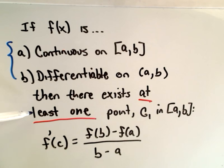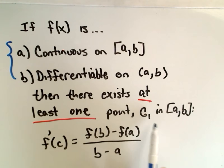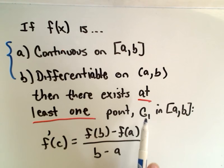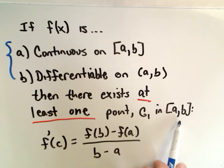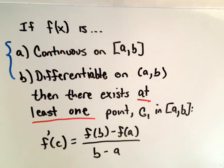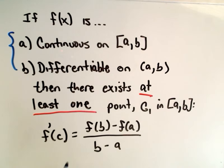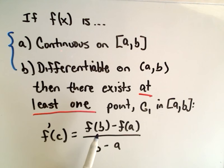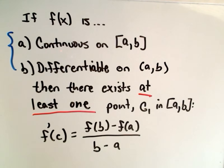Then there's at least one point — I'm going to call them c1, c2, c3, etc. if there's more than one — in this closed interval that satisfies this property. It basically says the derivative at that point equals the slope of the line connecting the endpoints. That's what the right side represents. So let's draw a little picture to explain this briefly.